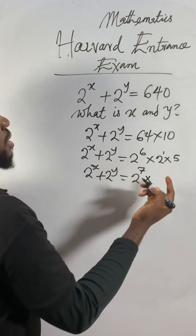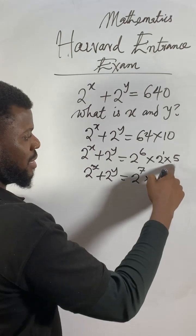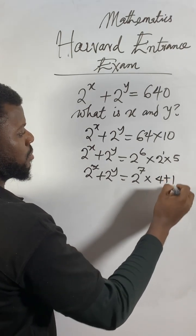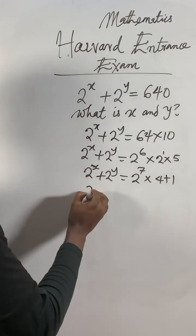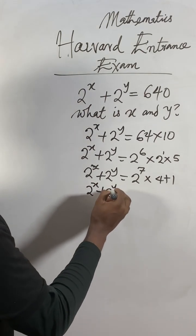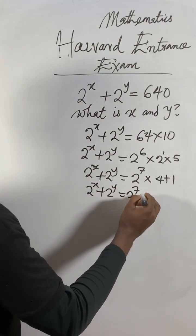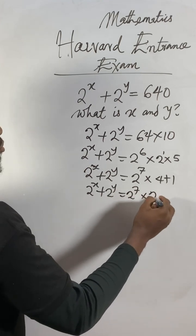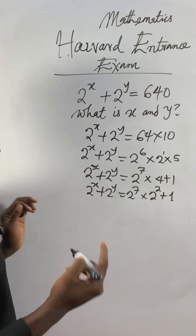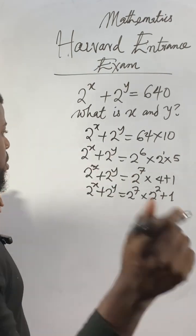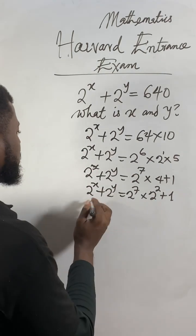Times this one. I feel like I can split this guy as 4 plus 1. As 4 plus 1 will give me 5. So yeah, now I can get 2 to the power of x plus 2 to the power of y equal to 2 to the power of 7. Times this guy, I feel like I do this as 2 to the power of 2 plus an exponent of 1. 2 to the power of 2 is 4.